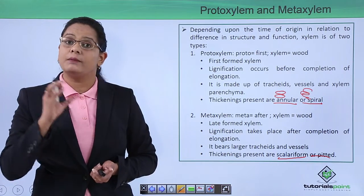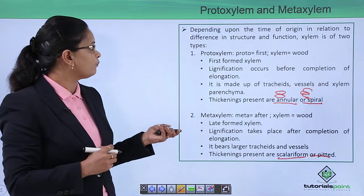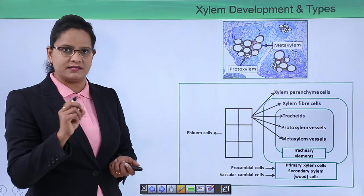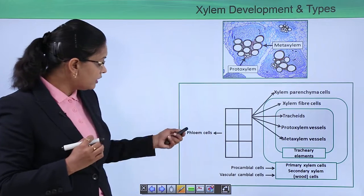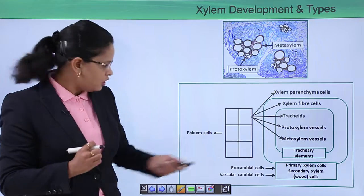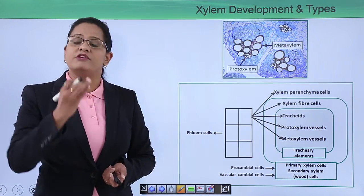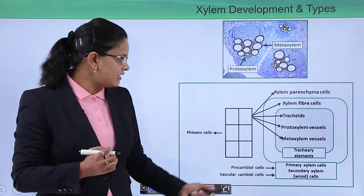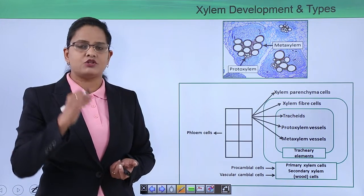In the diagram, proto xylem cells are clearly smaller in size and meta xylem cells are comparatively bigger. Both develop from meristematic tissues — pro cambium forms primary xylem and vascular cambium forms secondary xylem. This primary and secondary xylem in turn forms vessels and tracheids.